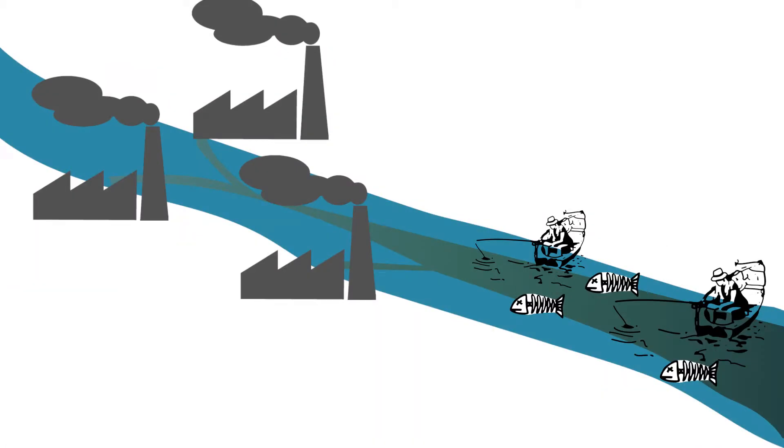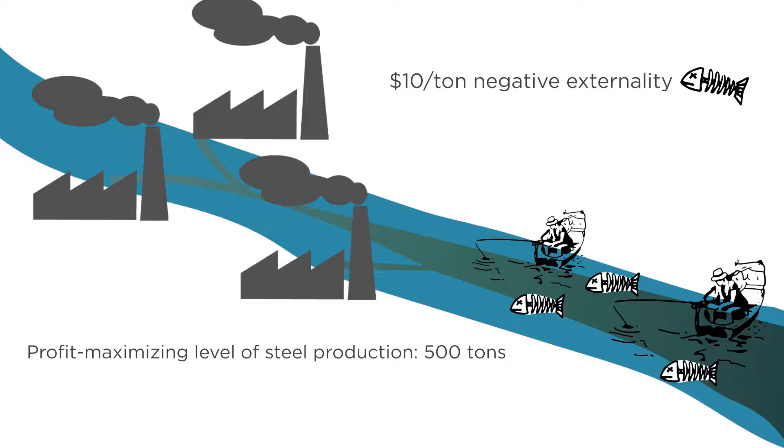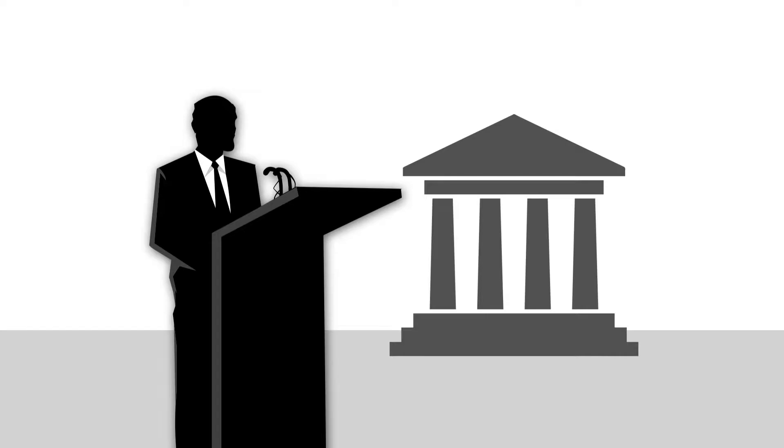Let's go back to our steel plants example from last lecture. Every ton of steel produced results in a $10 negative externality for fishermen whose fish are dying off from the plant's sludge. Suppose the steel plants produce 500 tons of steel if left to their own devices, but if the negative externality is taken into account, the socially optimal amount is only 450 tons. In that case, the government could just tell the steel plants they can only produce 450 tons. End of story.